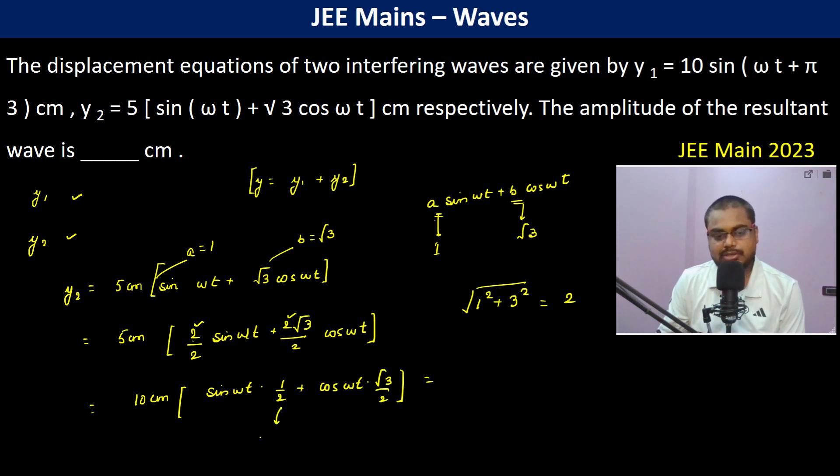This is cos 60° and this is sin 60°. So this becomes 10 centimeter sin ωt cos(π/3) plus cos ωt sin(π/3). If we clearly observe, this is going to be in this format: 10 centimeter sin(ωt + π/3).